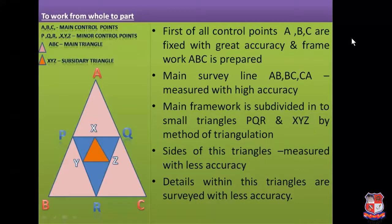Now the main framework ABC is subdivided into small triangles by creating subsidiary control points P, Q, R and X, Y, Z by the method of triangulation — meaning the whole survey area is divided into a network of triangles. So the main area ABC is divided into small triangles. The sides of these subsidiary triangles are measured with less accuracy, and the details within these triangles are surveyed with less accuracy using chain or tape. This is the first principle of surveying.